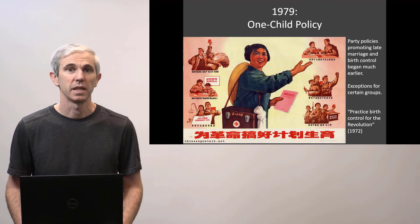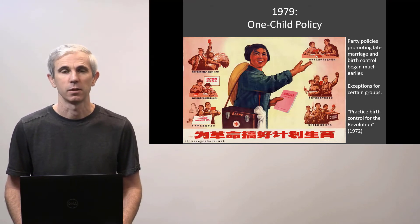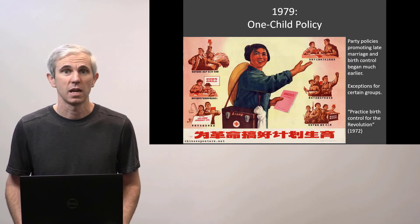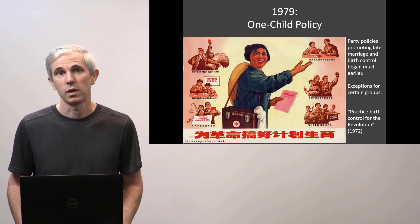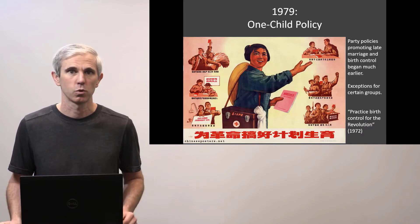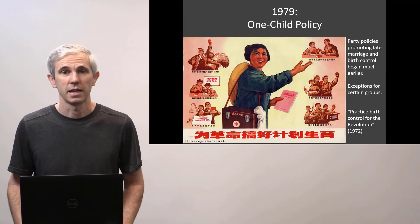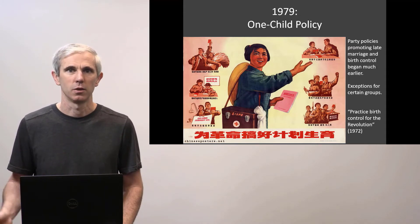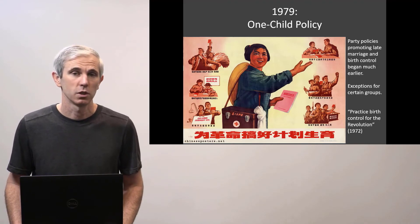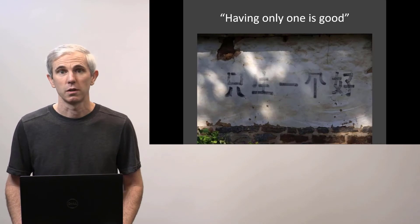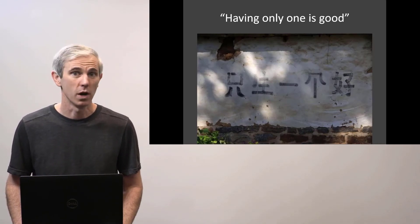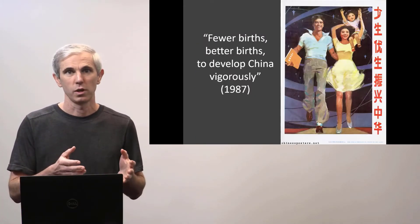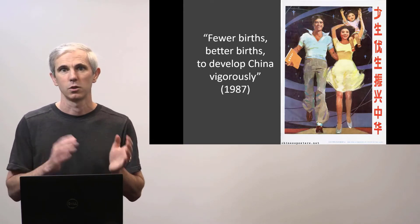The one-child policy was implemented beginning in 1979 and rolled out over the 1980s and early 1990s, and it was a policy accompanied by a lot of propaganda. This was not, however, the first time that the government had taken an interest in family planning. Since the 1950s, you had had campaigns to encourage people to practice birth control and to have fewer children. This was a policy that had exceptions for certain groups, like ethnic minorities and people in certain regions, or people who had lost a child in the war. The ubiquitous slogan found in villages and in cities was: having only one child is good. A lot of the government messaging put forward this notion that your personal choices on whether or not to have children directly affect the nation.